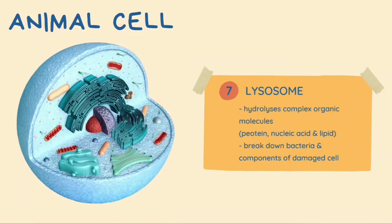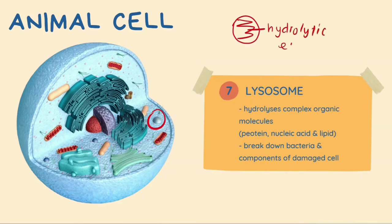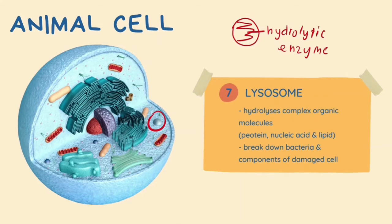The next organelle is the lysosome. The lysosome is a small spherical sac enclosed with a single membrane and contains hydrolytic enzymes inside it. The lysosome functions to hydrolyze complex organic molecules such as proteins, nucleic acids and lipids. It also functions to break down bacteria and components of damaged cells.